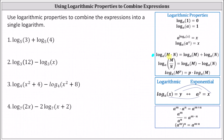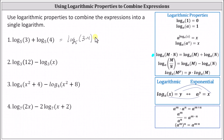There are a few things we should notice about this property. Both logs have to have the same base, and the coefficients of the logs must be one. For number one, we do have two logs with the same base — base five — and the coefficients are one. Therefore we can combine the two logarithms into a single log by applying the product property: log base five of three plus log base five of four equals log base five of the product of three and four. Since three times four is 12, we have log base five of 12.